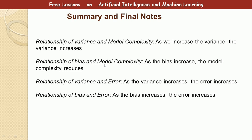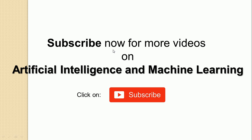I hope this has been informative. Final notes: as we increase the variance, the model complexity increases; as we increase the bias, the model complexity reduces. If you have any questions, leave them in the comments. I could make a more detailed explanation if you want, but I like to keep my presentations short. Please subscribe to my channel so I can make better videos. My videos on artificial intelligence and machine learning are free — thank you for watching.